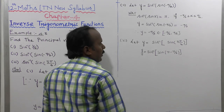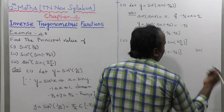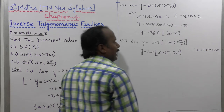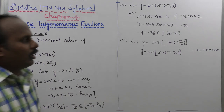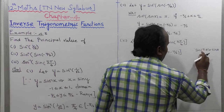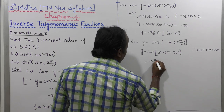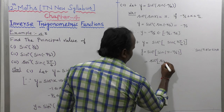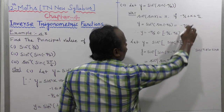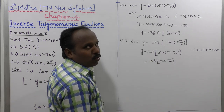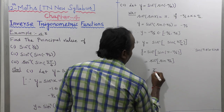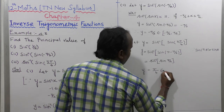Since sin(pi minus theta) equals sin theta — because pi minus theta is in the second quadrant where sine is positive — we have sin(5 pi by 6) equals sin(pi by 6). Now pi by 6 definitely exists in the range minus pi by 2 to plus pi by 2, so applying the formula sin inverse of sin(pi by 6) equals pi by 6.